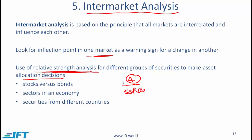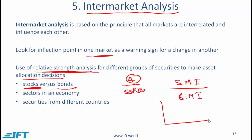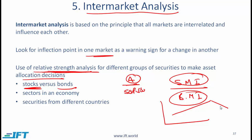With intermarket analysis, we look across different markets. We might represent stocks by a given stock market index and plot a graph showing the stock market index divided by a bond market index. If this graph is going up, it implies the stock market is doing well relative to the bond market. If it starts coming down, the stock market is underperforming relative to bonds. We can use inflection points like this to make asset allocation decisions between stocks and bonds.